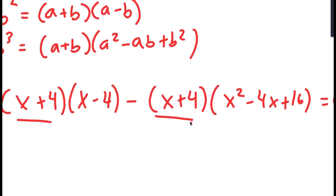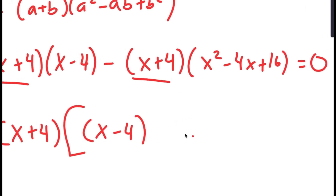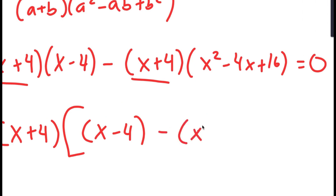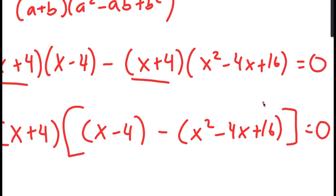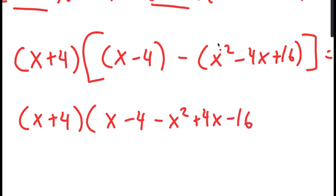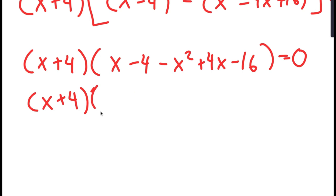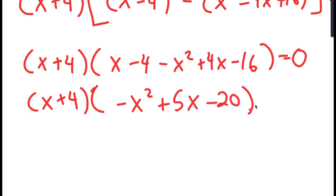Because both terms have (x+4) in them, I can factor out (x+4). So I get (x+4) times the quantity (x minus 4) minus (x squared minus 4x plus 16) equals 0. Distributing the negative sign gives (x+4) times (x minus 4 minus x squared plus 4x minus 16) equals 0, which simplifies to (x+4) times (negative x squared plus 5x minus 20) equals 0.